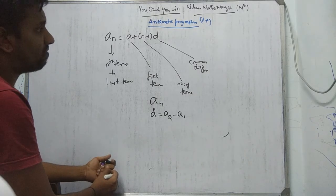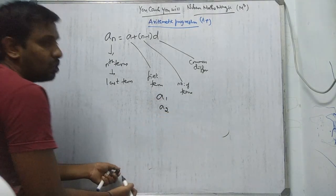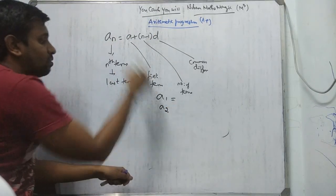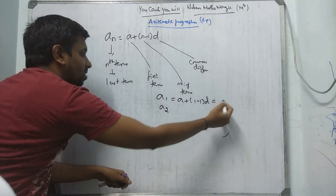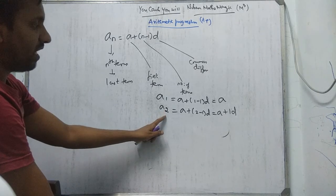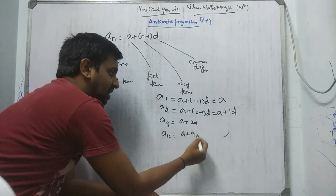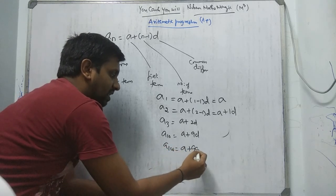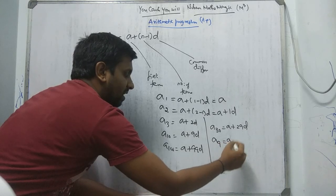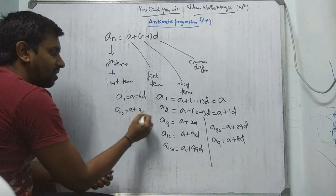Now the shortcuts. If N equals 1, AN equals A plus 1 minus 1 into D, which gives A. A2: put N equals 2, giving A plus 1D. A3 is A plus 2D. 10th term is A plus 9D. 100th term is A plus 99D. A24 is A plus 23D. Ninth term is A plus 8D. Seventh term A7 is A plus 6D. 15th term A15 is A plus 14D.